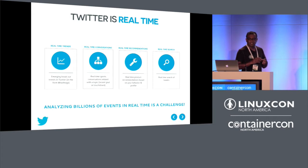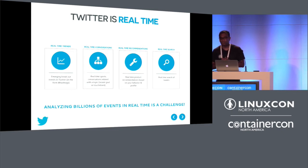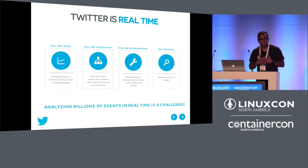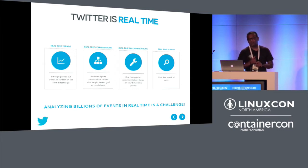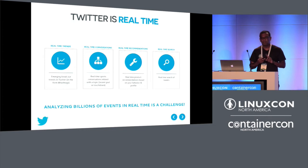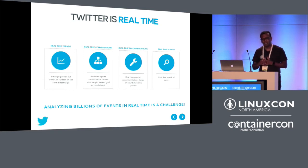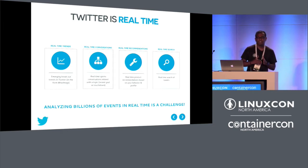Analyzing billions of events in real-time is always a challenge. We had been using a first-generation streaming system called Storm from 2011 to 2014. We ran into a lot of issues running at scale — especially at a few thousand nodes — including task isolation, debugging, performance tuning, and inability to sustain GCs. We summarized 19 problems in a SIGMOD paper we published last year. That's when we decided to write Heron to solve all those problems.